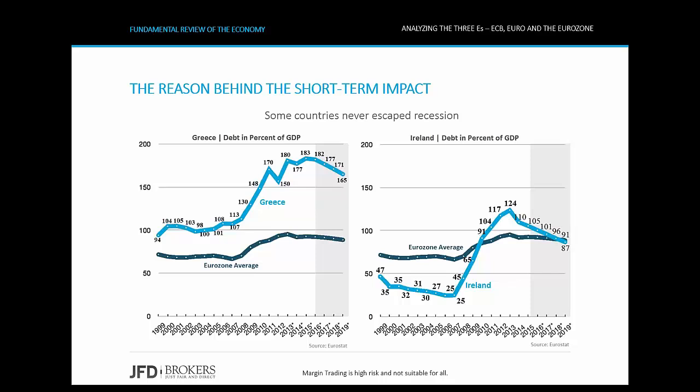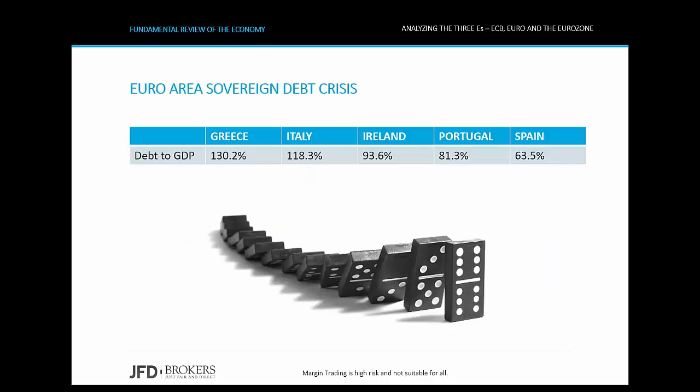The reason behind the short-term impact on the Euro area economy was that some countries never escaped recession, or they turned to growth just for a few quarters. Greece's and Italy's debt ballooned sharply, and the two governments turned to bailout in 2010, signaling the start of the Euro area debt crisis. At the end of 2010, other countries' debts culminated as well. Greece had the highest debt-to-GDP in the Euro area at 130%, Italy at 118%, Ireland around 94%, Portugal at 81%, and Spain at 63.5%.